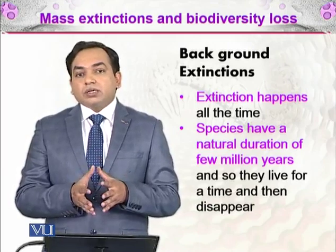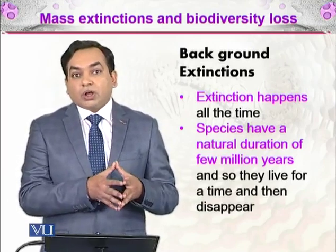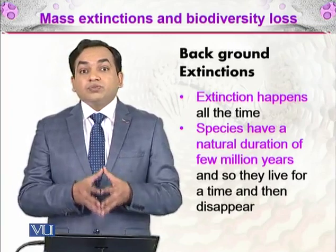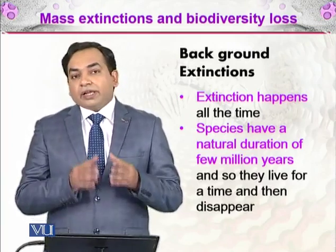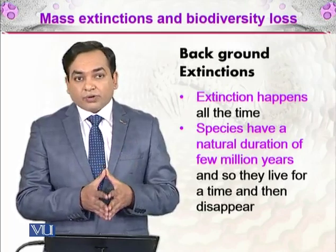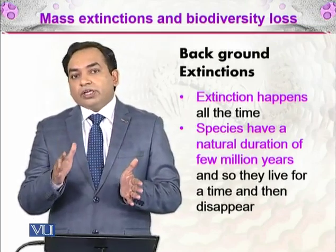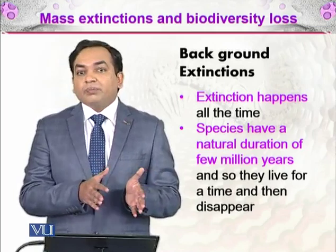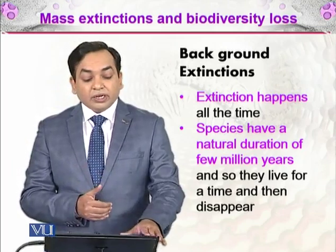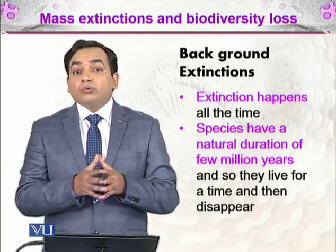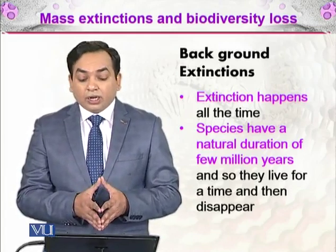When discussing normal life, extinction is happening every day. New species are discovered as well as certain species we don't even know about can go extinct. Extinction happens all the time throughout the history of life. A species has a life — it develops through speciation and then is no longer able to inhabit a particular environment and goes extinct. A species has a natural duration of a few million years; they live for a time and then disappear. That disappearance accounts for 5 to 10 percent of species dying out per million years, which is called background extinction.